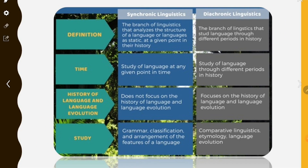In a tabular column comparison: synchronic linguistics can be defined as the branch of linguistics that analyzes the structure of a language or languages as static at a given point in their history. The keyword here is static — one fixed point in time.